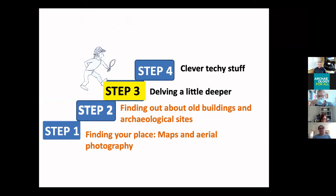The first step was specifically about how you go about finding a place and what inspires you to choose a particular place over another — looking very much at maps and the various sites you can use to find out about a place from a mapping perspective. In step two we moved on to databases: once you've chosen your place, how can you find out a little bit more about it.